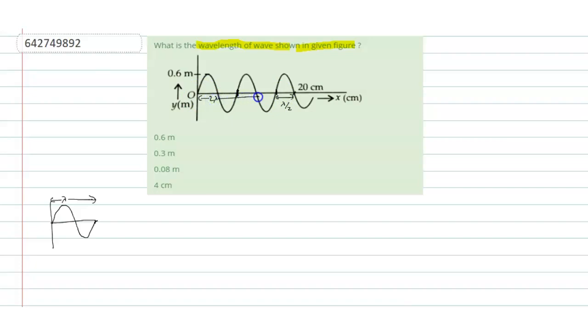So we can say that this distance is 2 lambda plus lambda by 2 equals 20 cm.